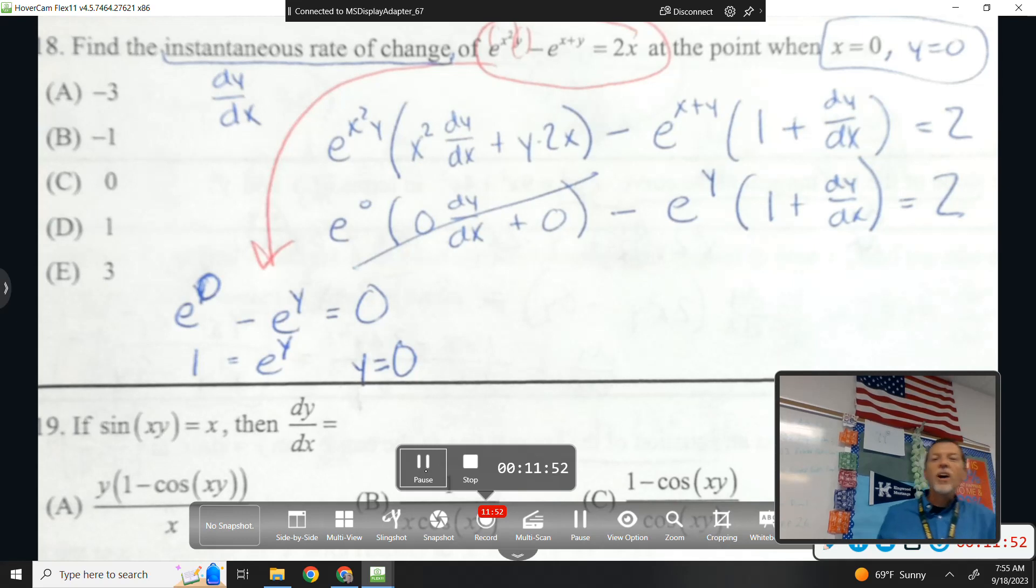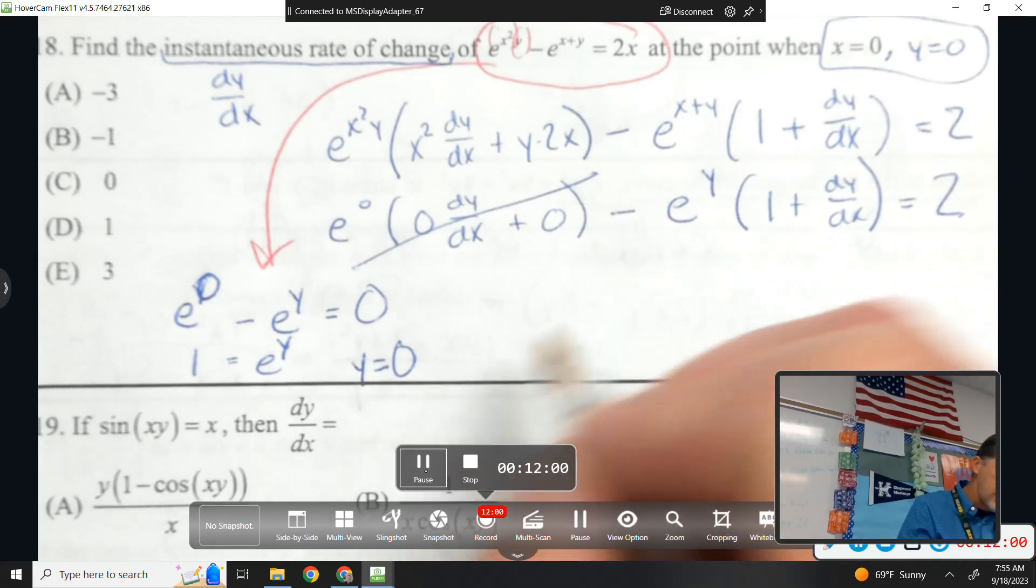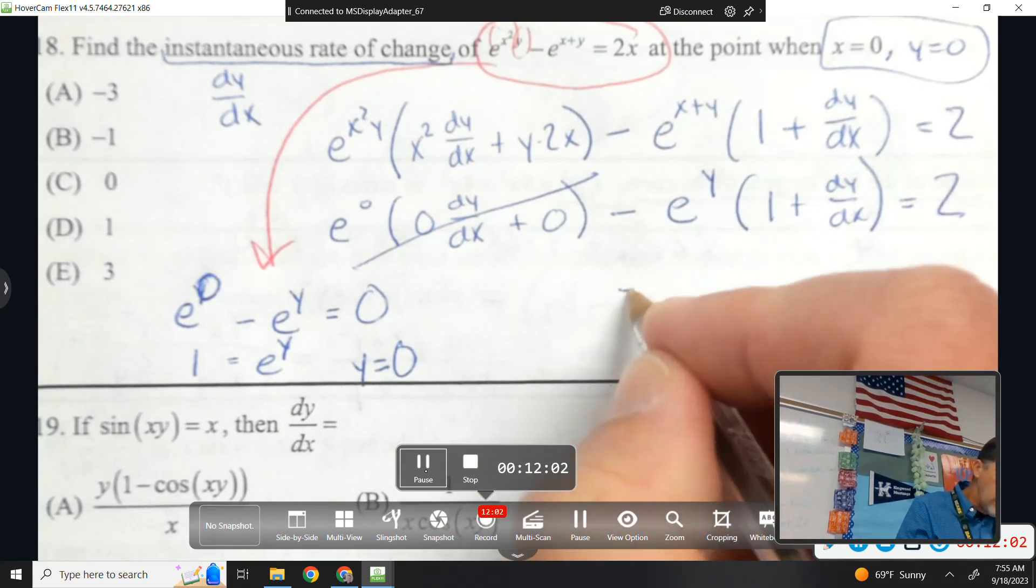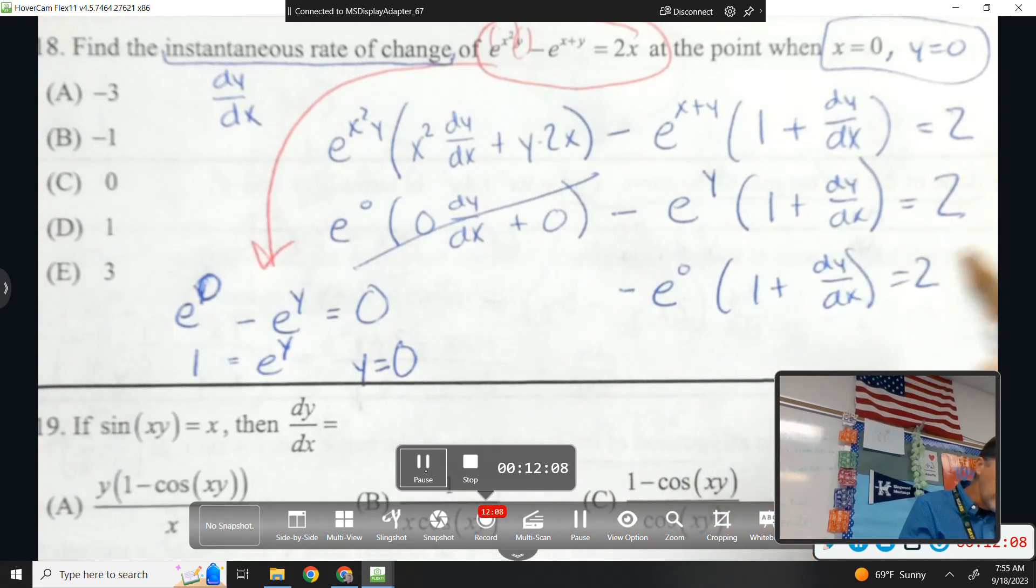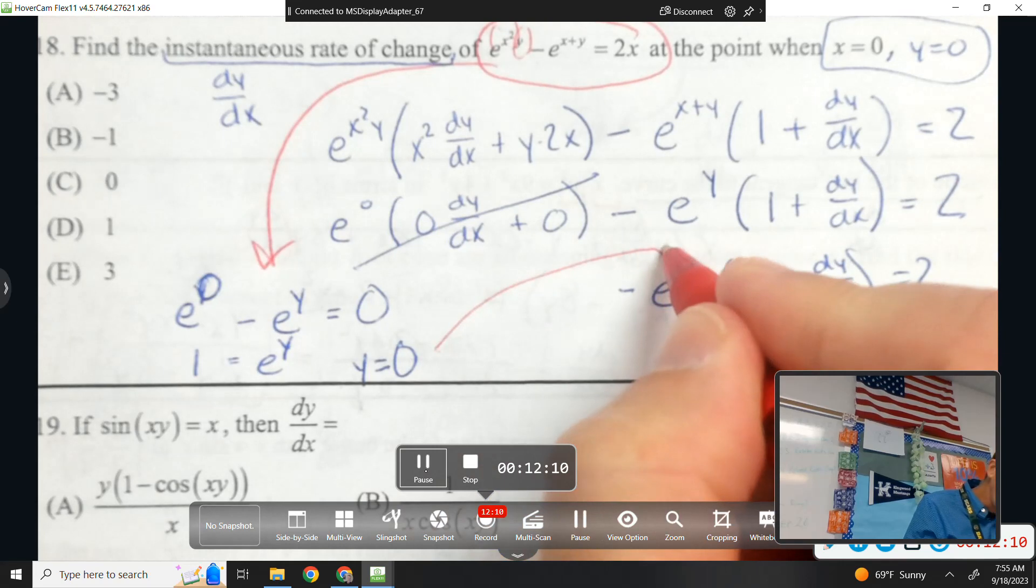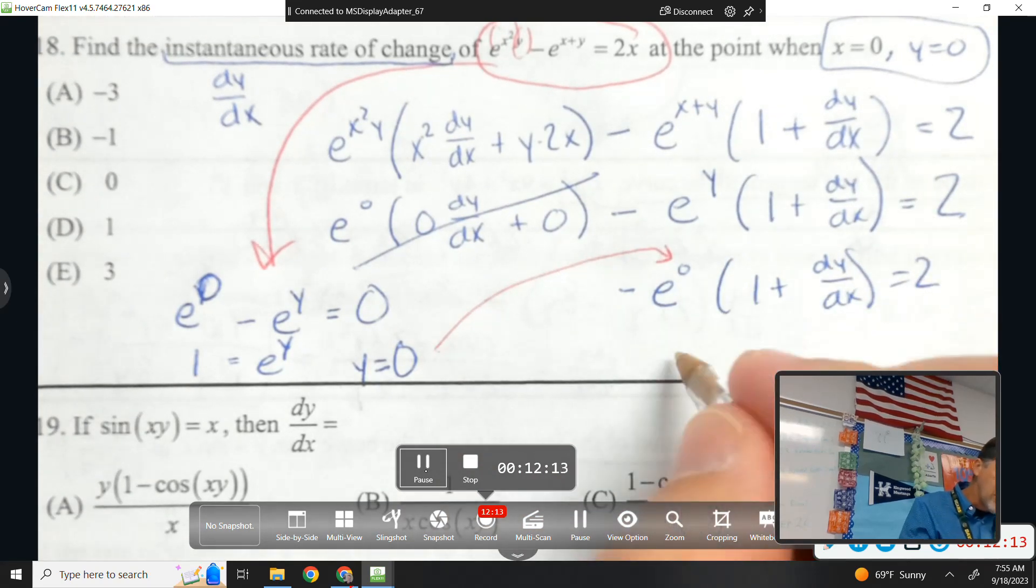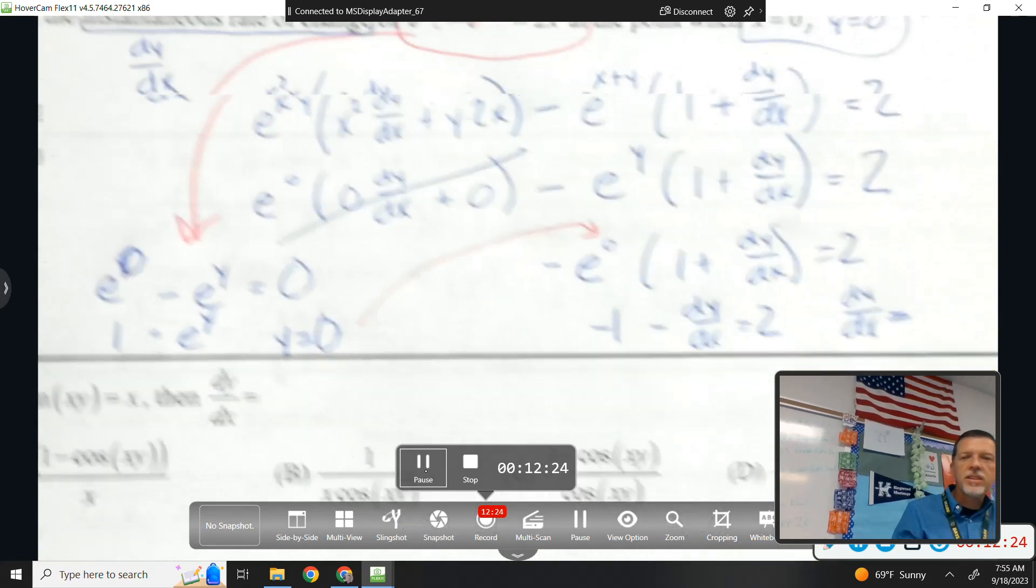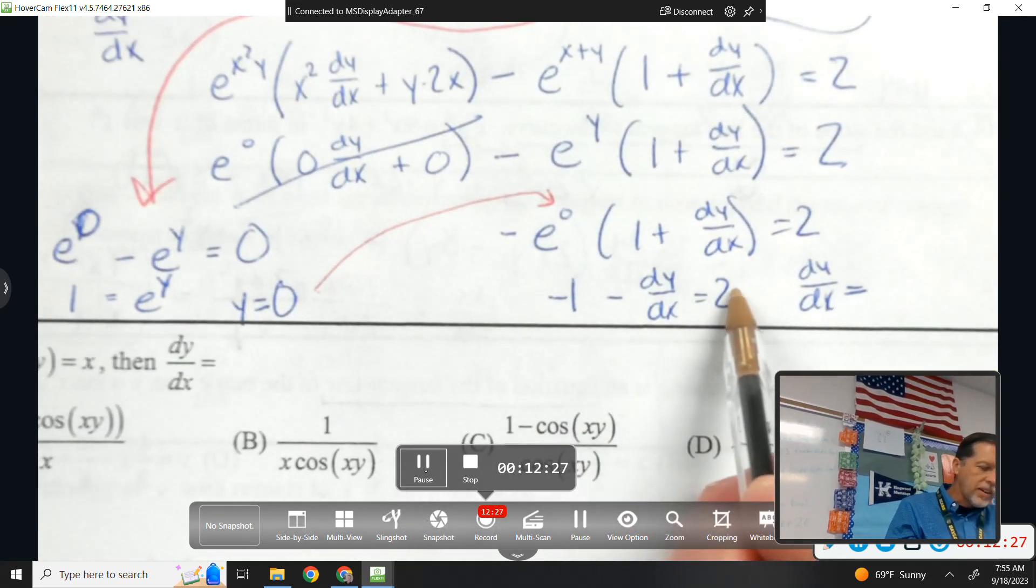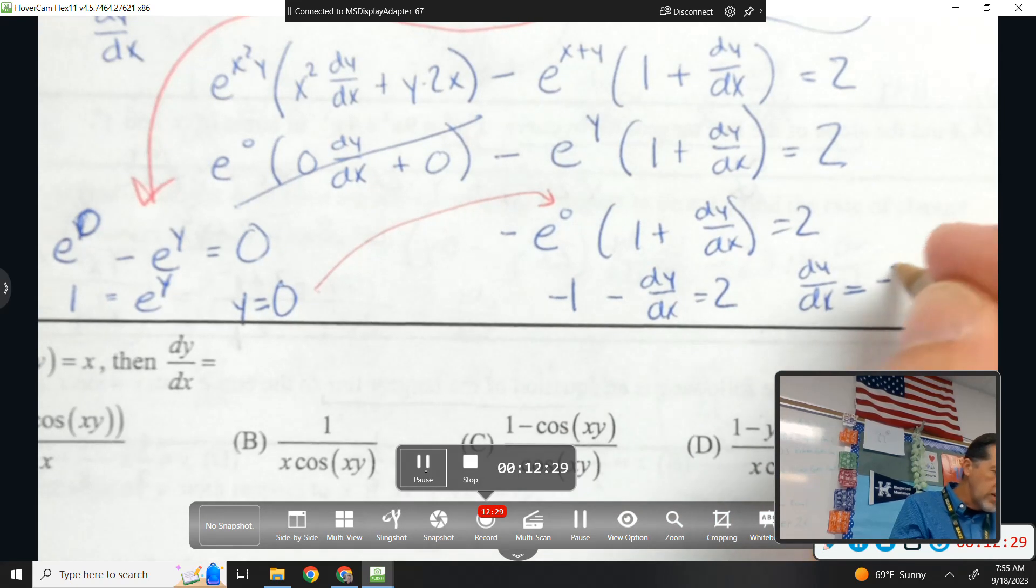Okay, so there was some extra algebra work, sort of hidden algebra work in this problem. They gave me x. I had to go figure out what y is. But now we know y, so we can jump back into our equation here. e to the 0 is 1. Negative 1. Minus dy/dx equals 2. So if I move things around, I'll add dy/dx to the other side. Subtract 2 over, dy/dx is negative 3.